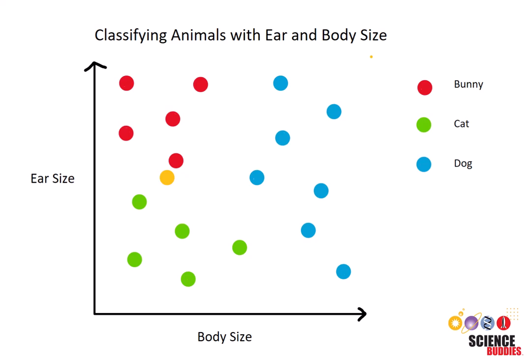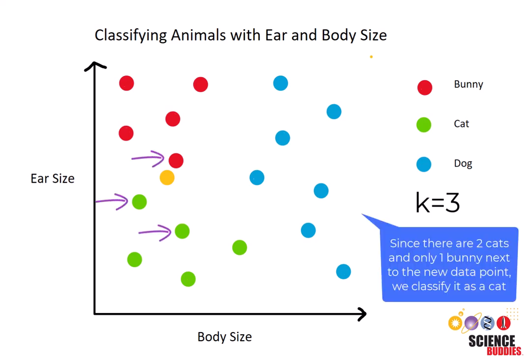However, if our K-value was 3 and there is a mix of different points, we classify the new point as the one that had the most votes, and our new data point will now be classified as a cat instead of a bunny.